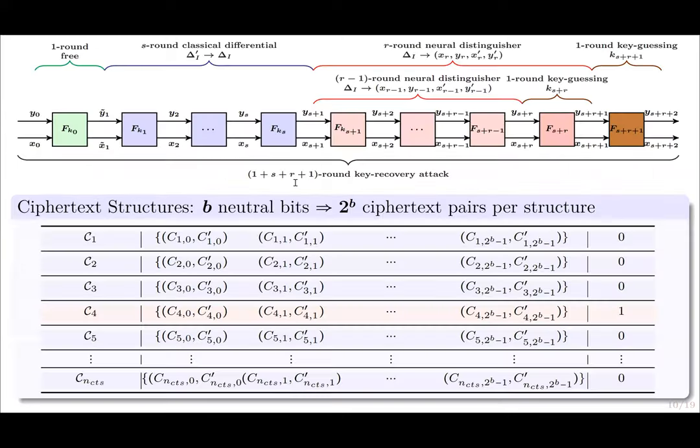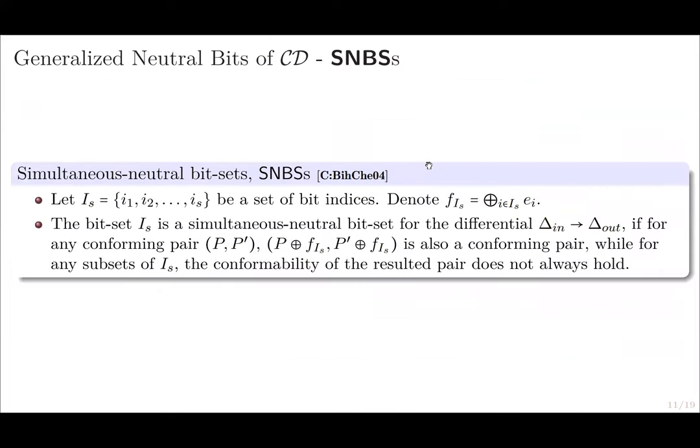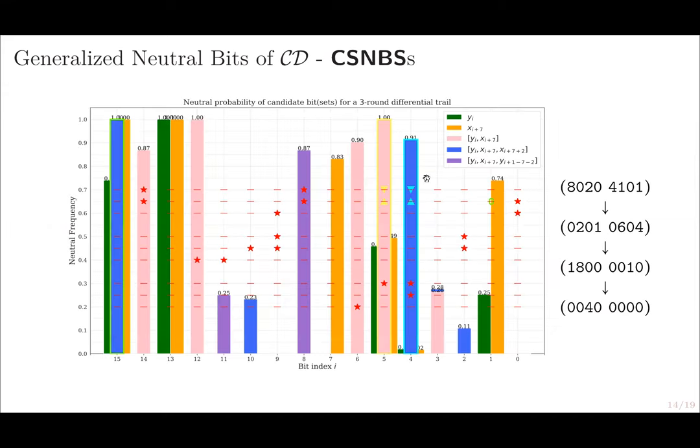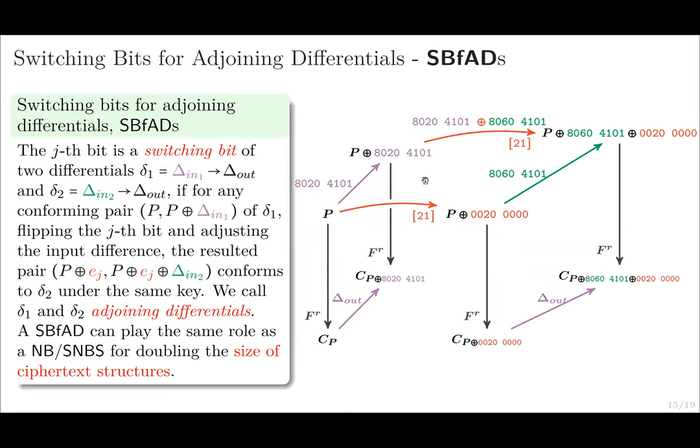Neutral bits can be used to generate a structure of data pairs from a single pair, and they conform or do not conform to the prepended classical differential together. Thus, they can effectively boost the weak signal from the distinguisher. For this, we found the simultaneous neutral bits, the conditional simultaneous neutral bits, and switching bits for adjoining differentials.